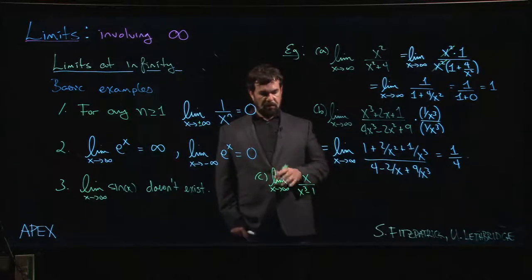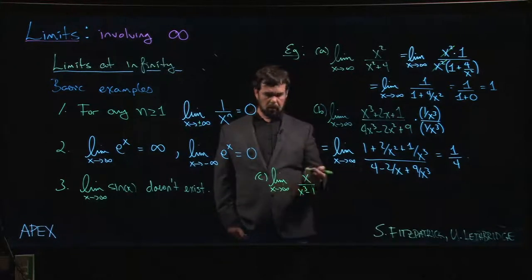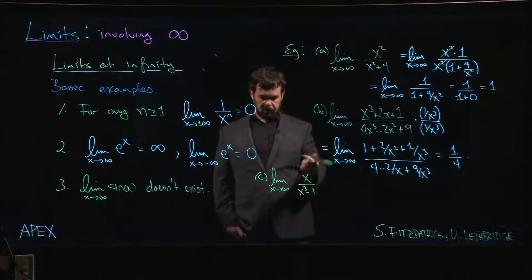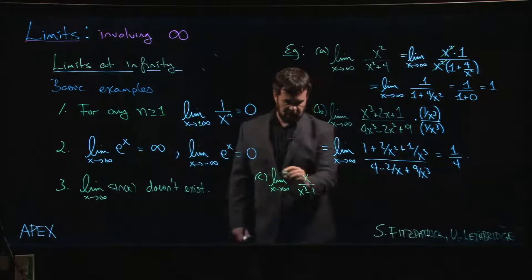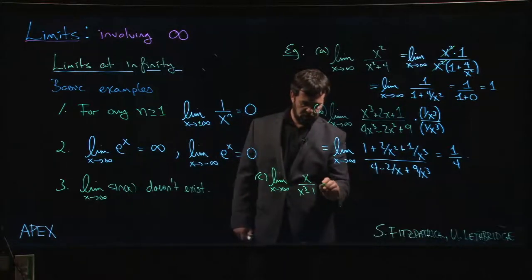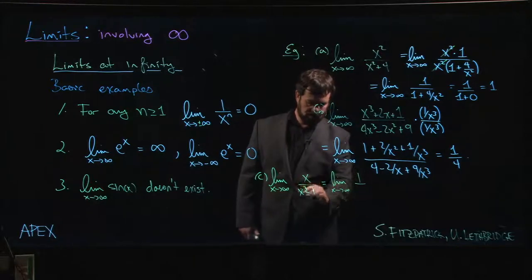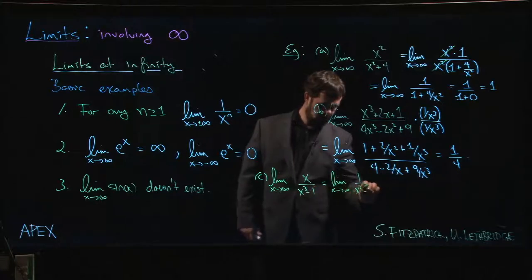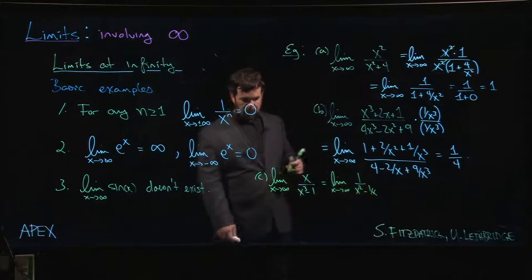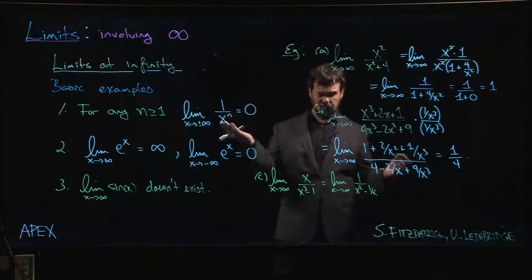Different people will approach this in different ways. Some people will say, well, you should always just divide by the highest power of x in the denominator. That'll work. Some people will say, no, let's just factor an x out from the numerator. Do whichever way you want. If we just factor out the x from the numerator, if we divide top and bottom by x, we're going to get one on the top. X cubed over x becomes x squared, and then we have a one over x. Now we could say, well okay, that one over x is going to zero, leaves me with that one over x squared that's kind of going to go to zero as well.